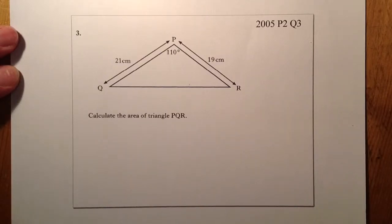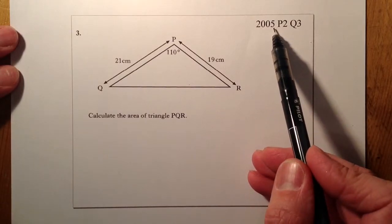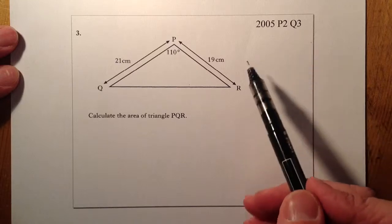This is National 5, it's exam practice homework. We're looking here at Standard Grade Credit 2005, Paper 2, and it's Question 3.